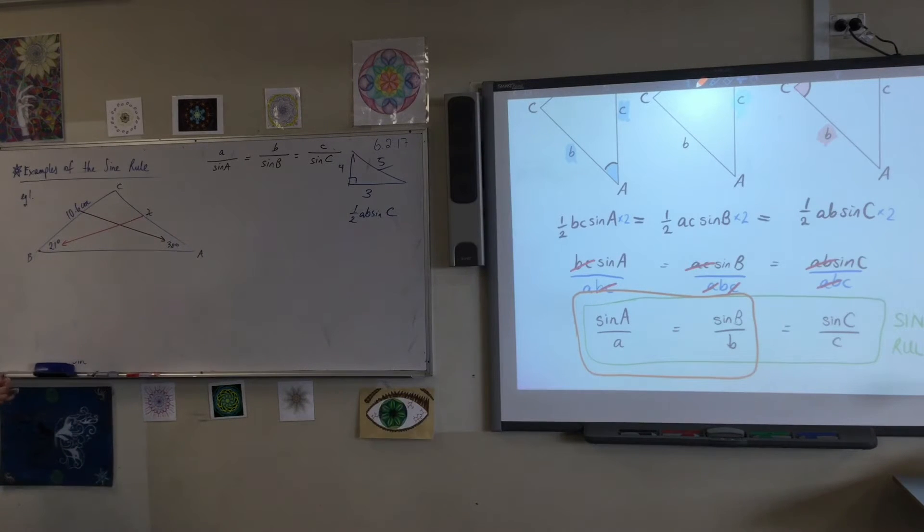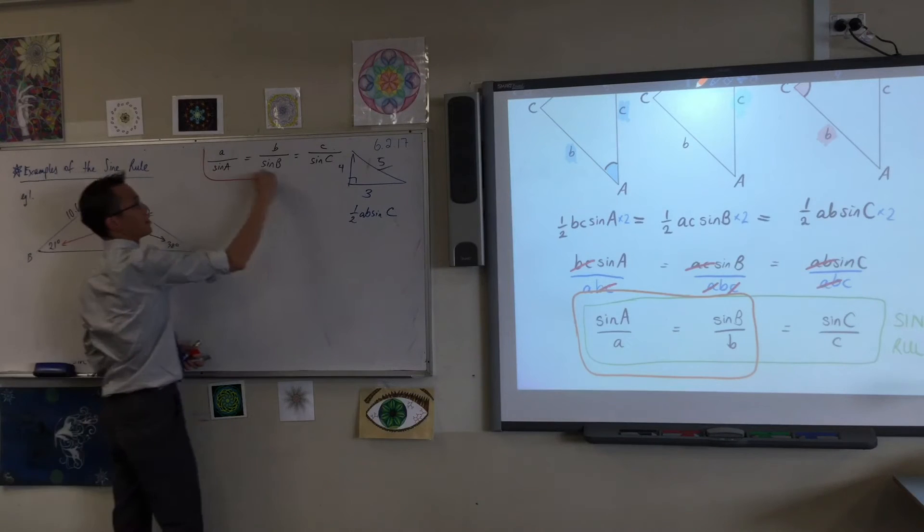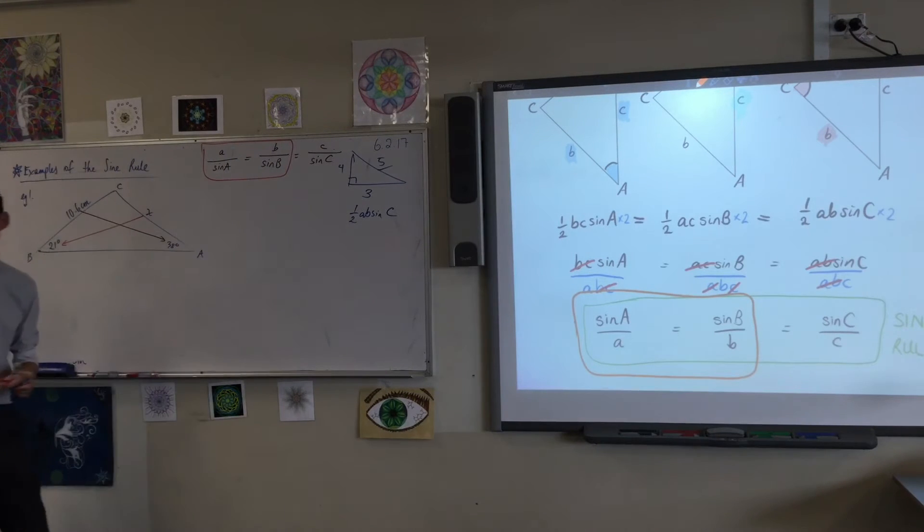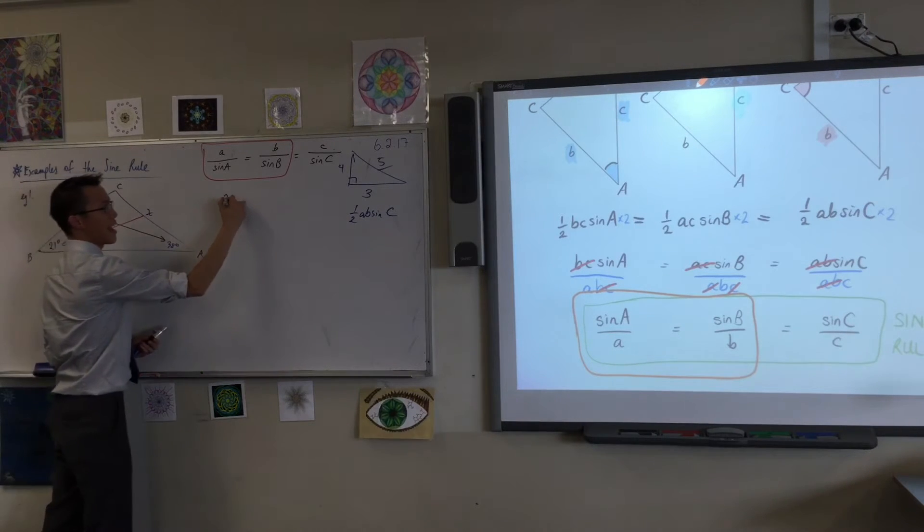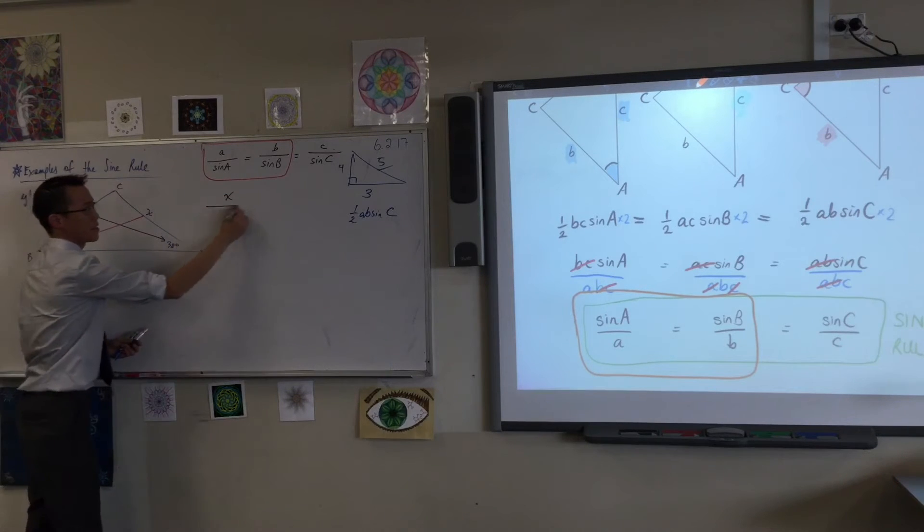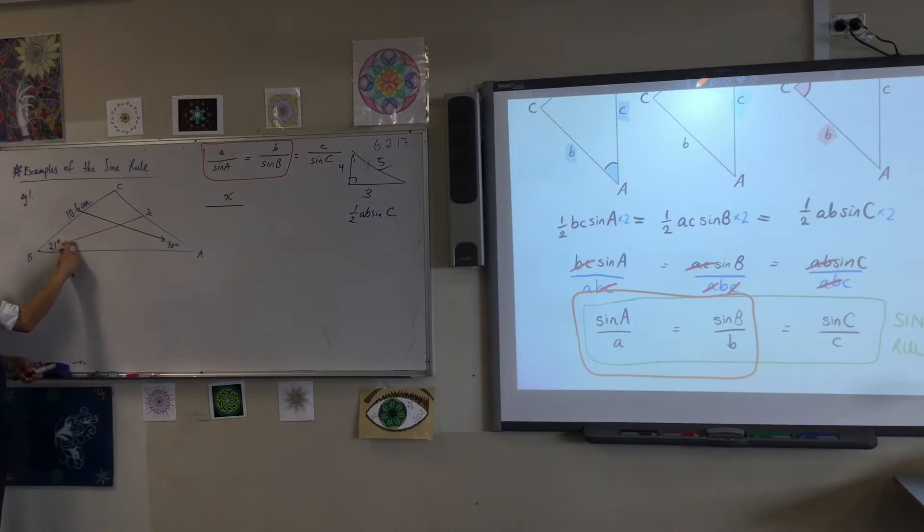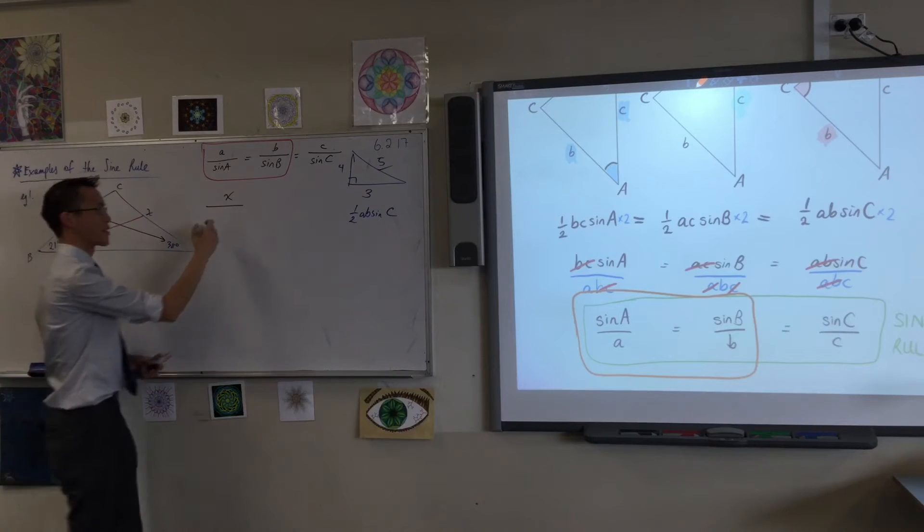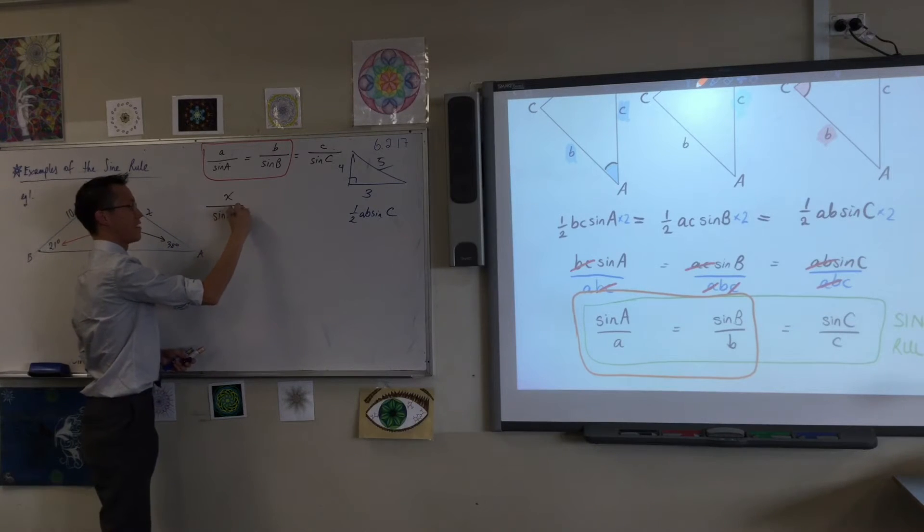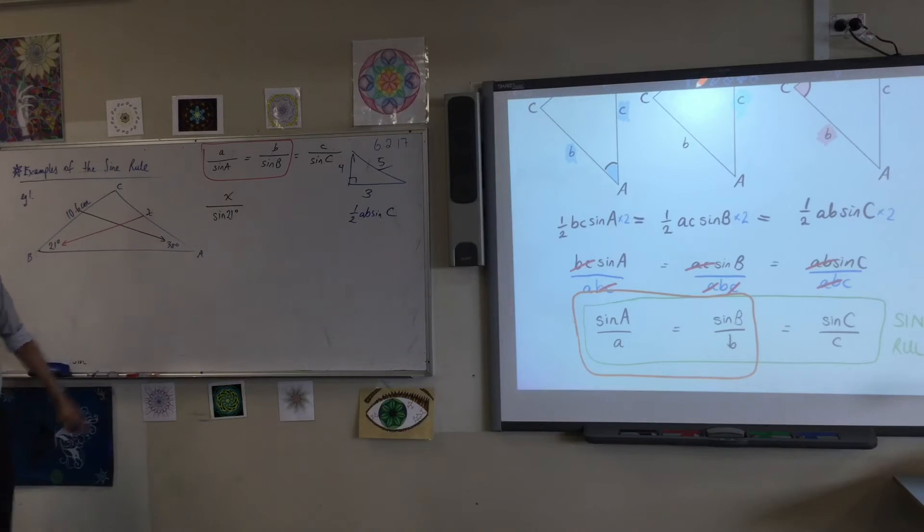You have to think about it. I'm just going to use two parts of this - you can use three depending on the question but I only need two. So I need a leg and its opposite angle. I'm going to start with the one I don't know, that's X, and its opposite angle which is 21 degrees. Now this is the sine rule so I'm going to say sine 21 degrees.